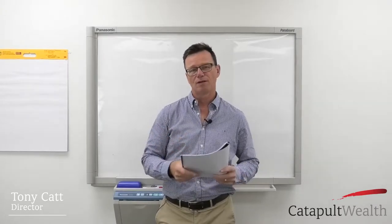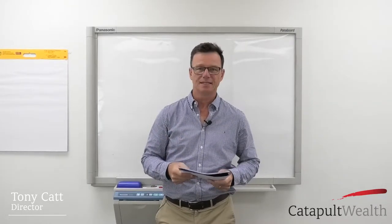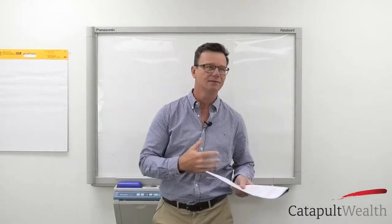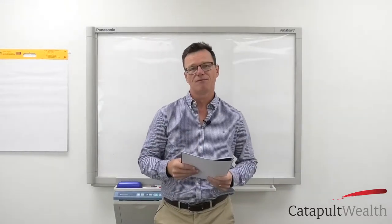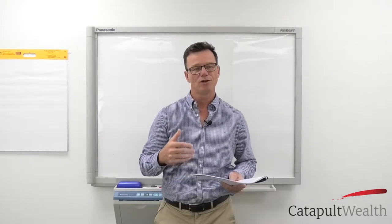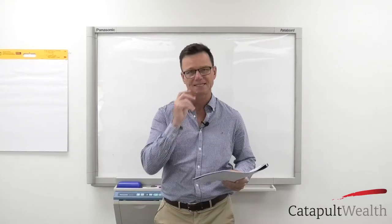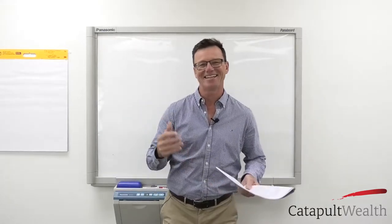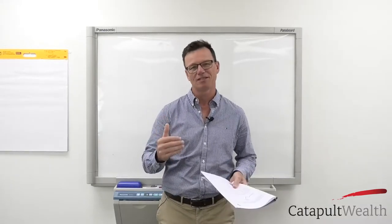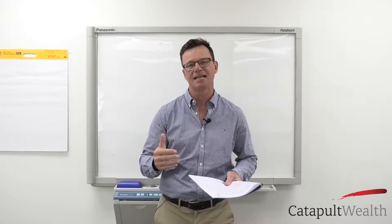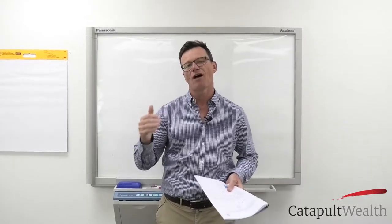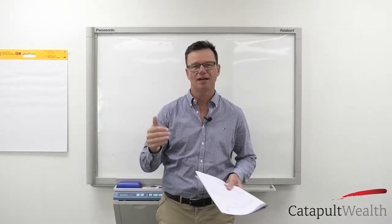Today we'll talk firstly about the ASX indices. Many of you will pick up the paper, listen to the news and various media outlets, and they'll refer to — particularly in Australia — things like the All Ordinaries Index. The All Ordinaries Index — what the hell is that? Really, the first thing you probably need to know about it is it's the average of the top 500 companies in Australia.